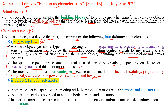The second characteristic is sensors and actuators. A smart object is capable of interacting with the physical world through sensors and actuators. A smart object does not need to contain both — it can contain one or multiple sensors and/or actuators depending upon the application.